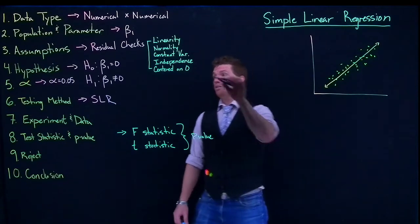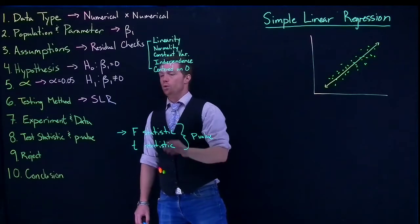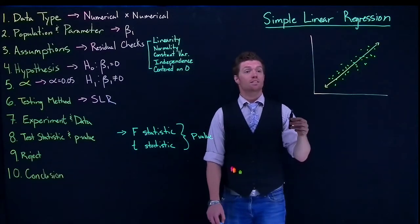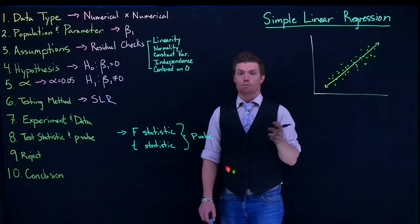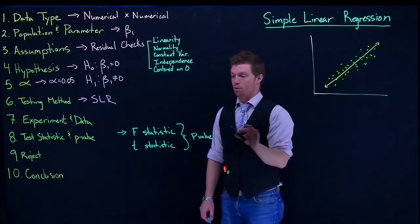But our p-value is exactly the same. It's still, given that the null hypothesis is true, what's the likelihood that we would see data this extreme or more extreme? That's just what our p-value is.